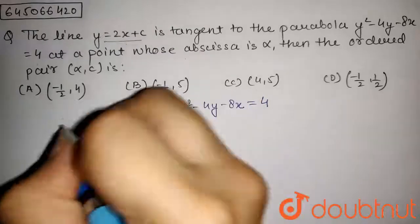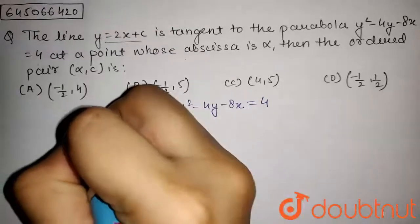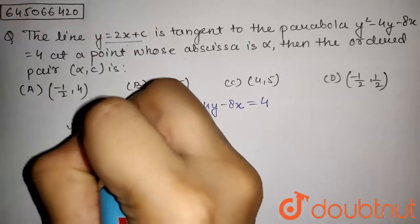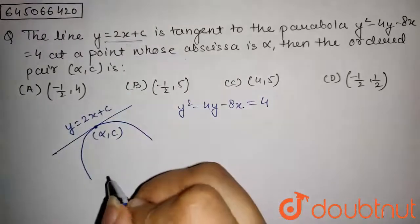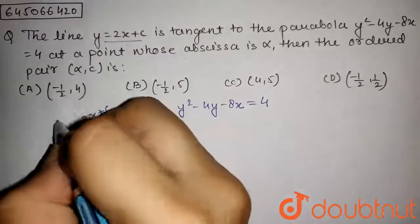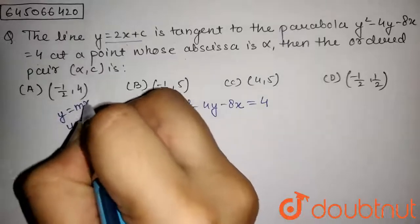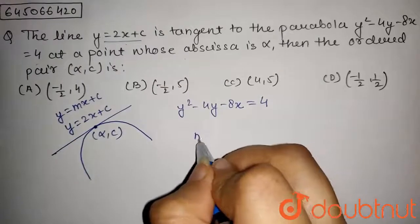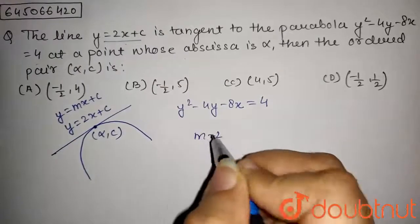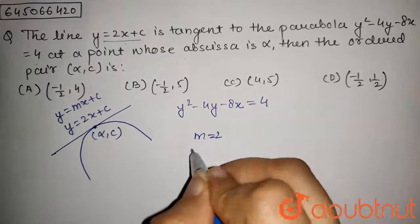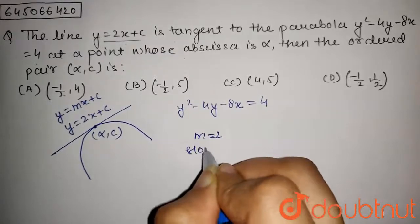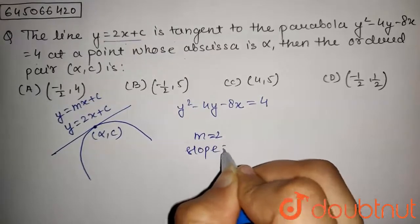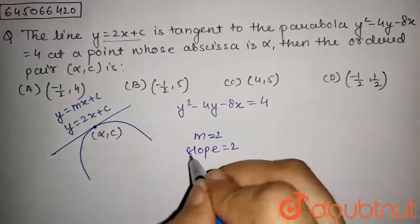This line is y = 2x + c. Comparing with y = mx + c, m will be equal to 2, and m is the slope. So the slope of this line is equal to 2.